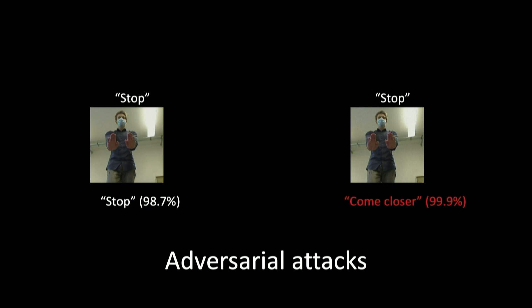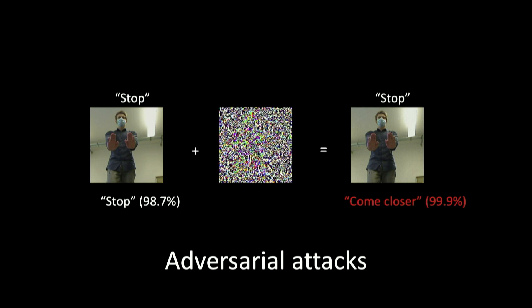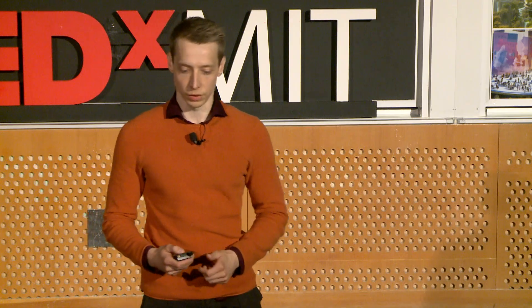What we just witnessed is a phenomenon known as adversarial attacks. If we take a closer look at these two images, we notice they are actually identical, except for a small noise pattern that is added to the image on the right. The magnitude of this noise pattern is so small that it is visually imperceptible to the human eye. However, the AI now thinks this is something completely different.